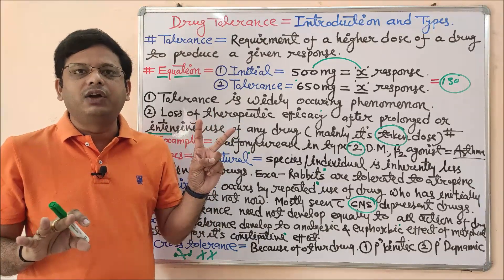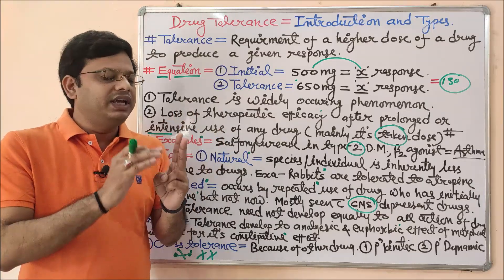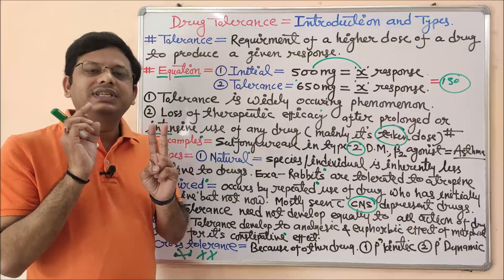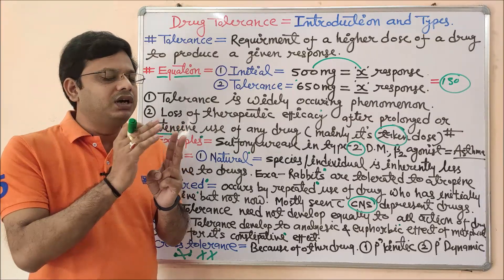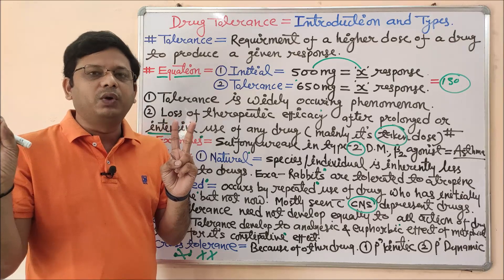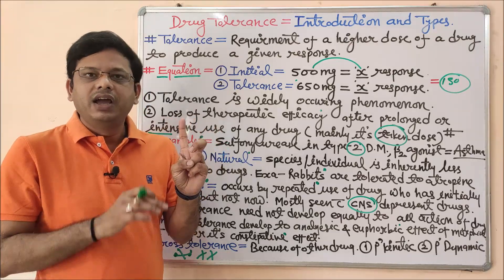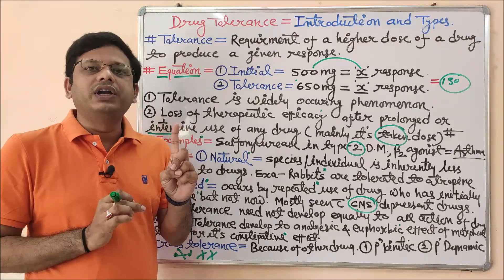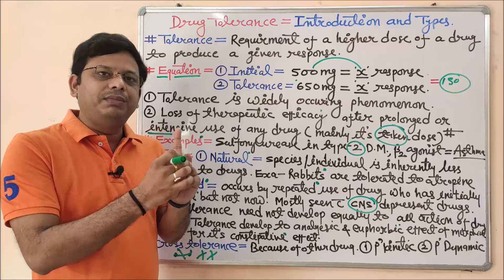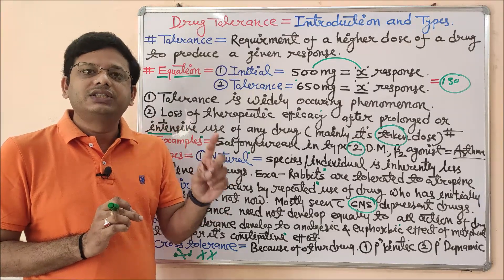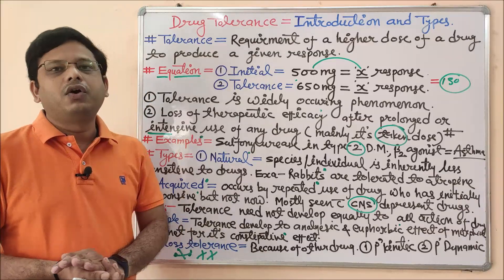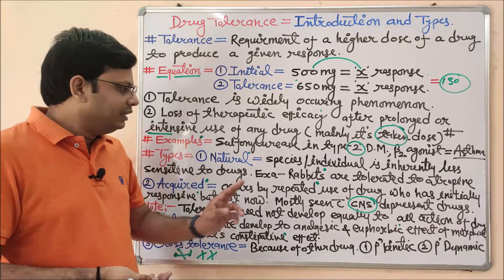Consider two persons: person A uses alcohol, person B has never taken alcohol. Both need to go for major surgery requiring general anesthesia. To produce the same level of anesthesia, we give approximately the same concentration of the anesthetic. For person B, the dose will produce desirable anesthesia and unconsciousness. But for person A, who is in a chronic alcoholism condition, the same drug concentration will not produce the same level of anesthesia — because the alcohol has developed cross tolerance for that general anesthetic.